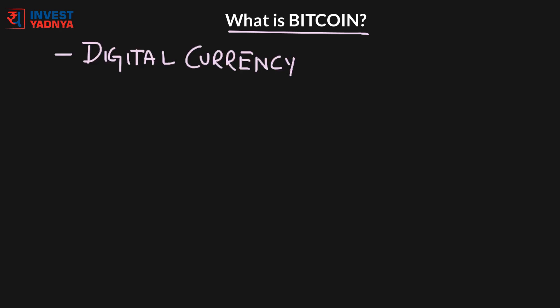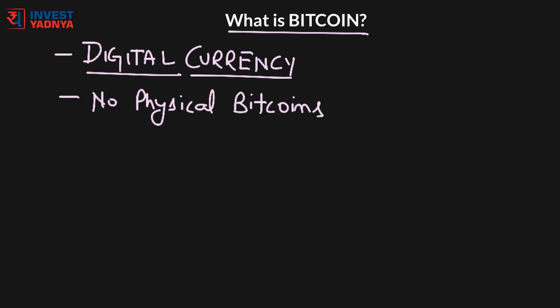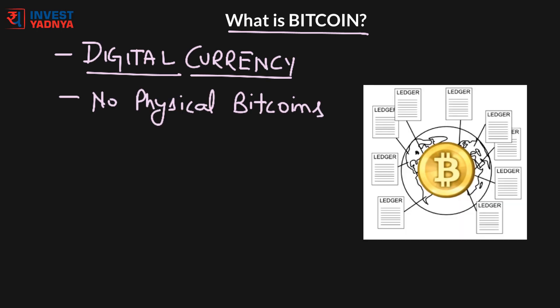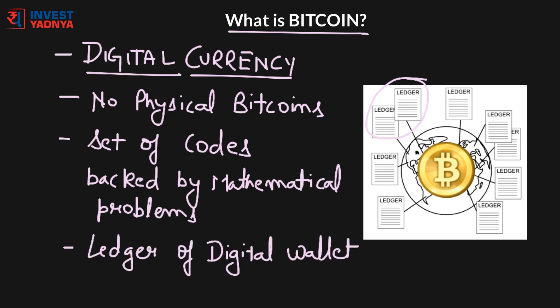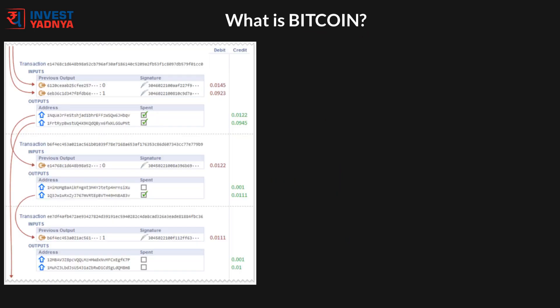Bitcoin is a digital currency created in 2009. It is a currency and is completely digital. There are no physical Bitcoins, only balances kept on a public ledger in the cloud, which along with all Bitcoin transactions is verified by a massive amount of computing power. Bitcoins are just a set of numbers or codes backed by complicated mathematical problems, reflected on the public ledger you hold in a digital wallet. Bitcoins look something like this.